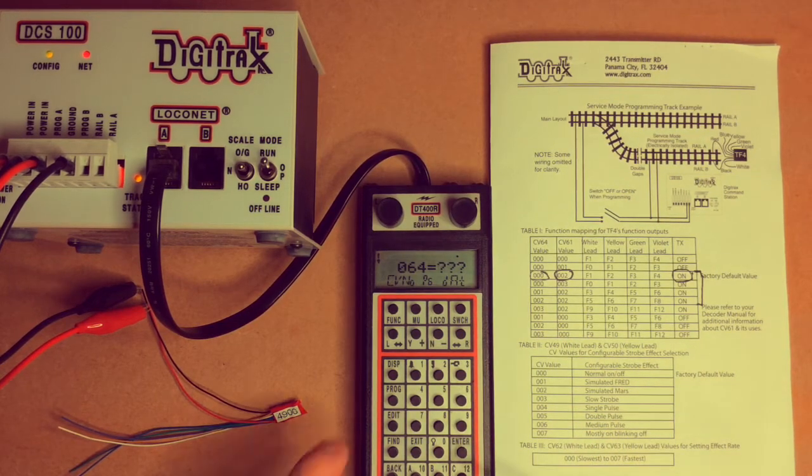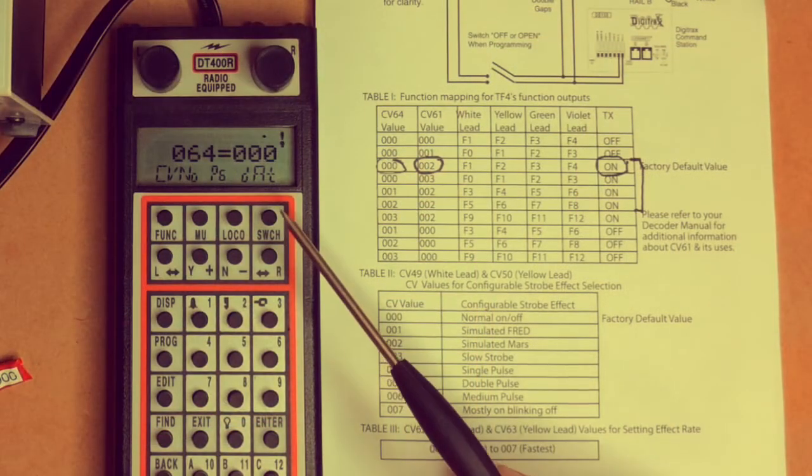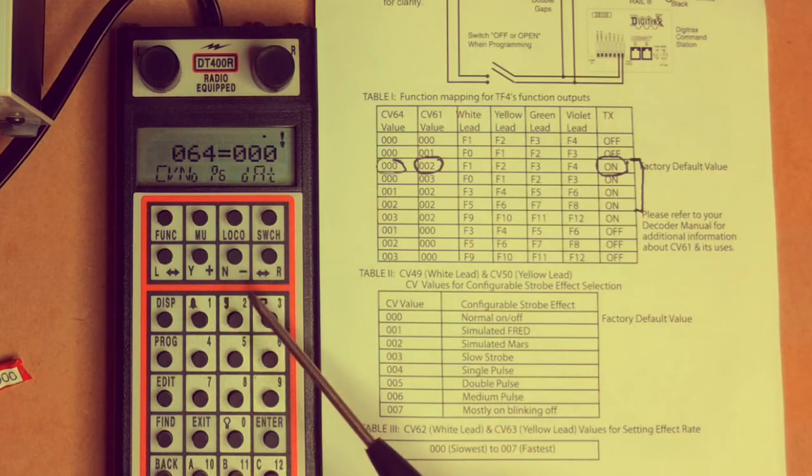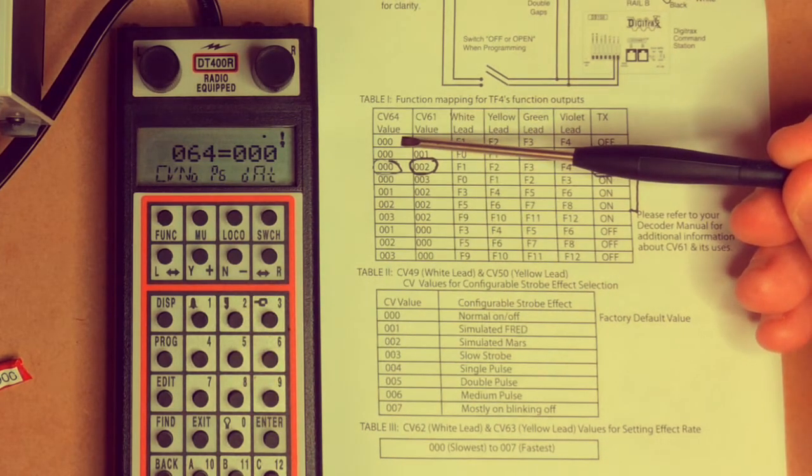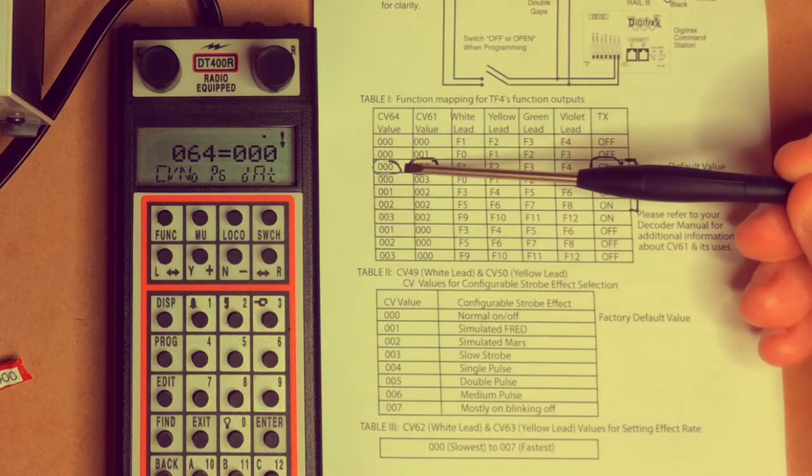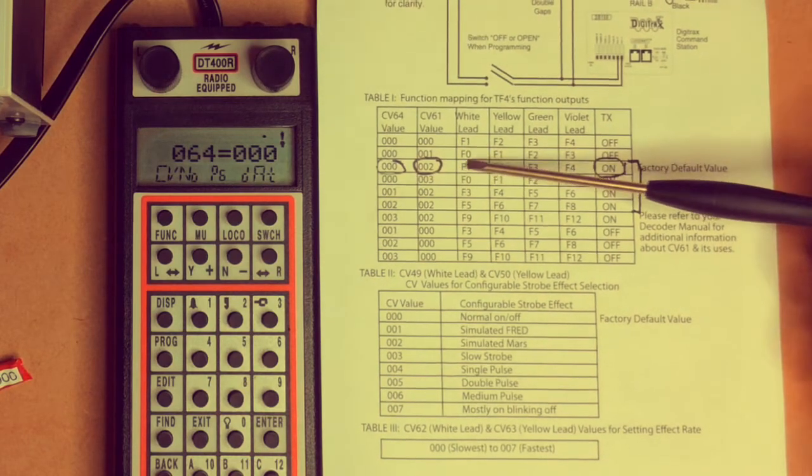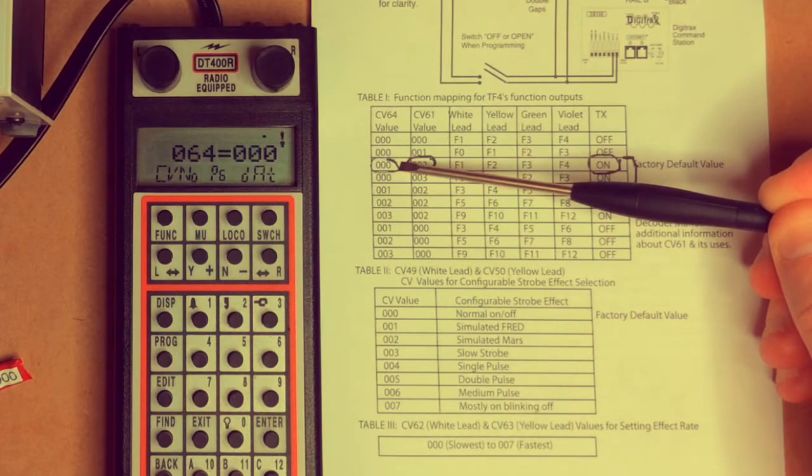CV64 currently is showing 000. Let's read it just to see. Press Display. Reading—it's showing up as a value of zero. It comes from the factory with a value of zero, no surprise. What do we want it to be in our case to get the functions we want? We want zero. So that's good, we're good to go.